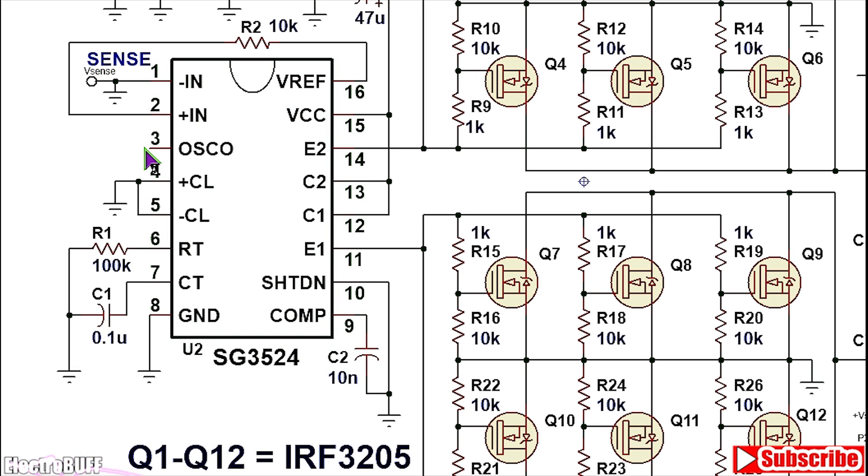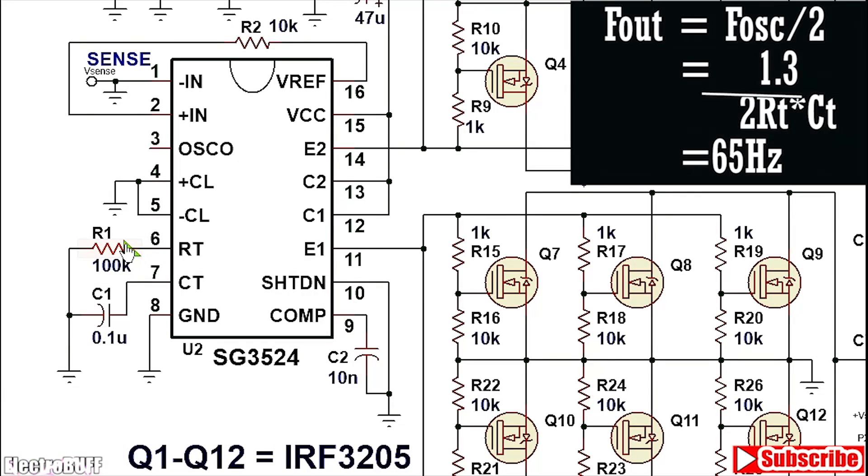Pin 3 is the oscillator output because we do not need this for this project you can leave it unconnected. Pin 4 and 5 can be used for current sensing and regulation but in this case just disable them by pulling both of them down to ground as shown.